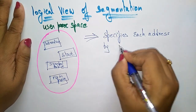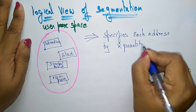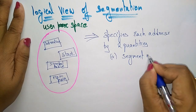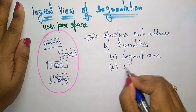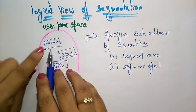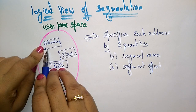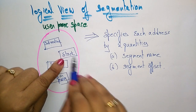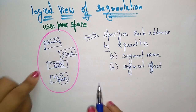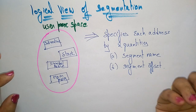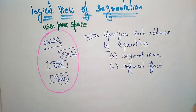The user specifies each address by two quantities: the segment name and the segment offset. The offset is nothing but the address. So the address of the subroutine consists of the segment name — that is subroutine — and the subroutine offset. Similarly, stack name and stack offset, symbol table name and symbol table offset. If you know the segment name and the offset, the CPU can get the data at that particular address location and execute the program. That is the logical view.